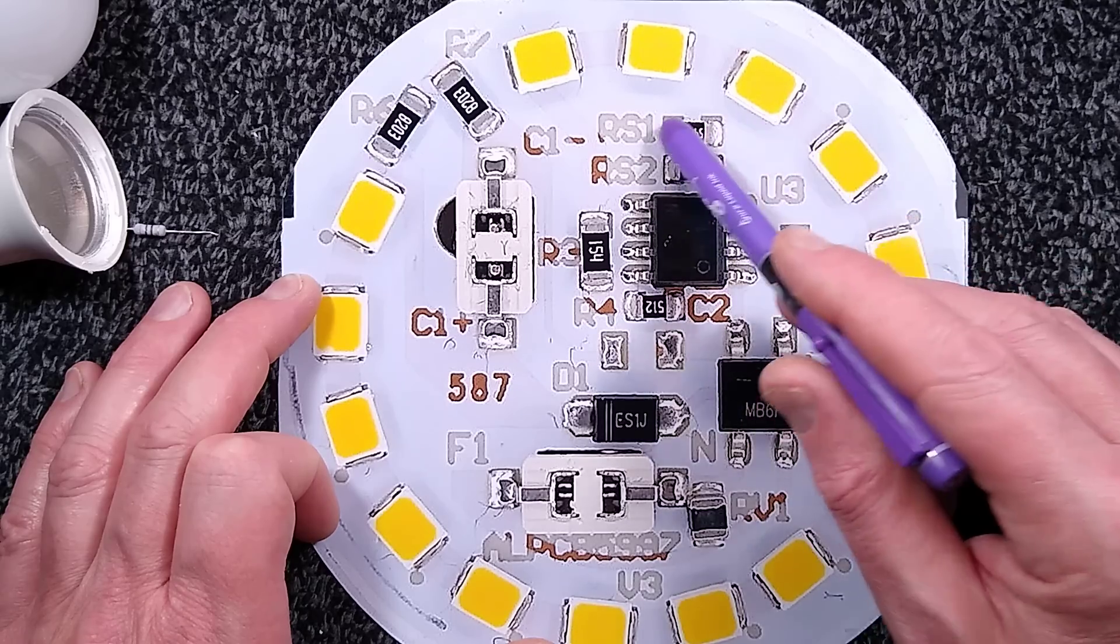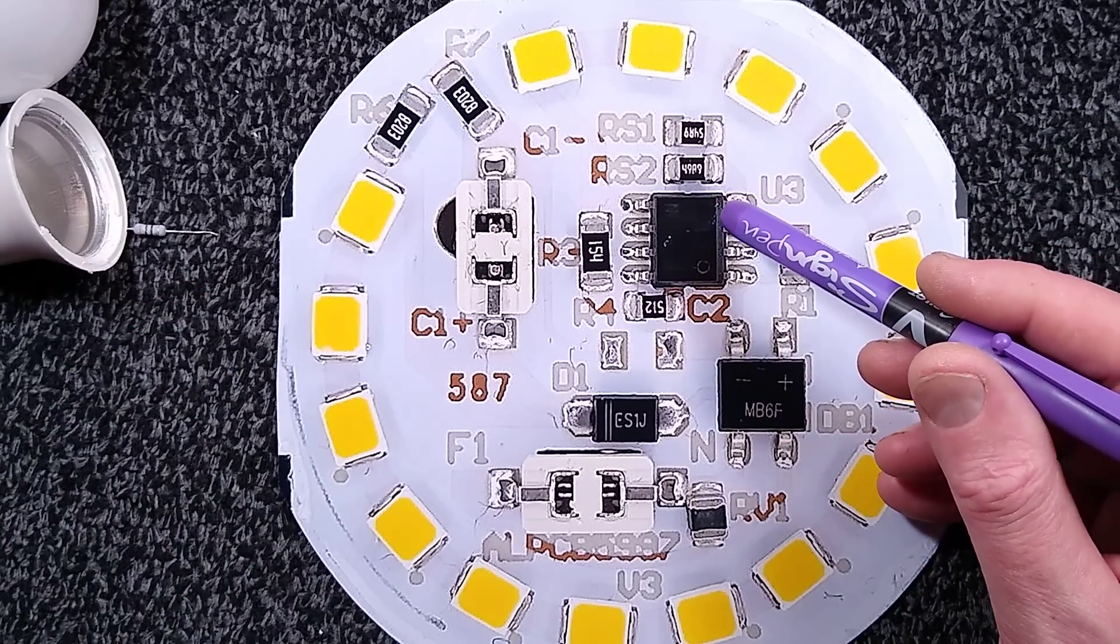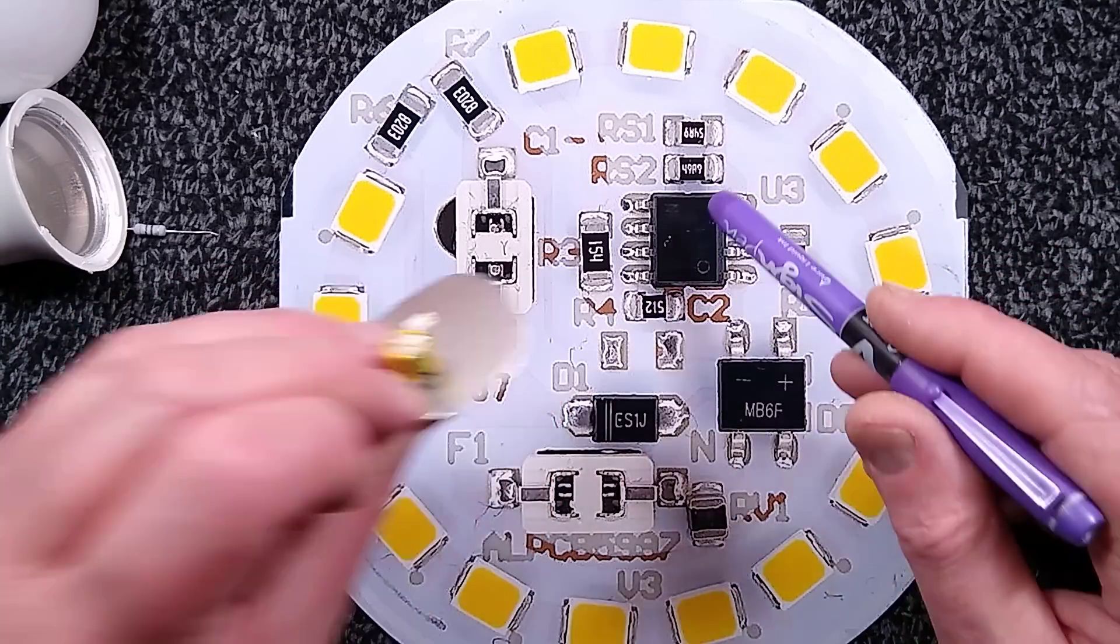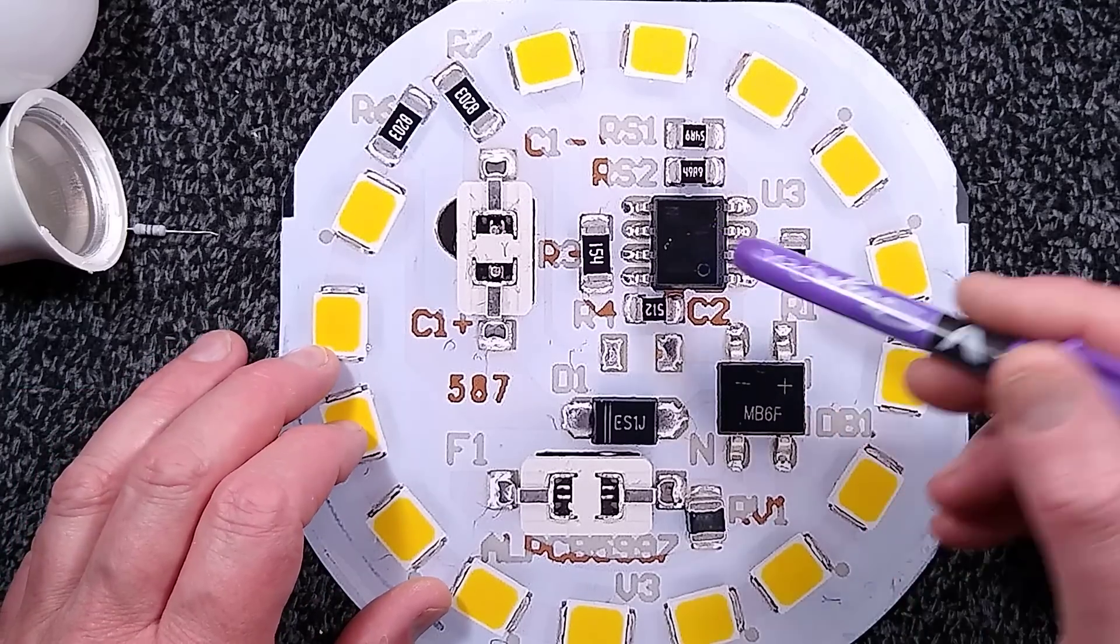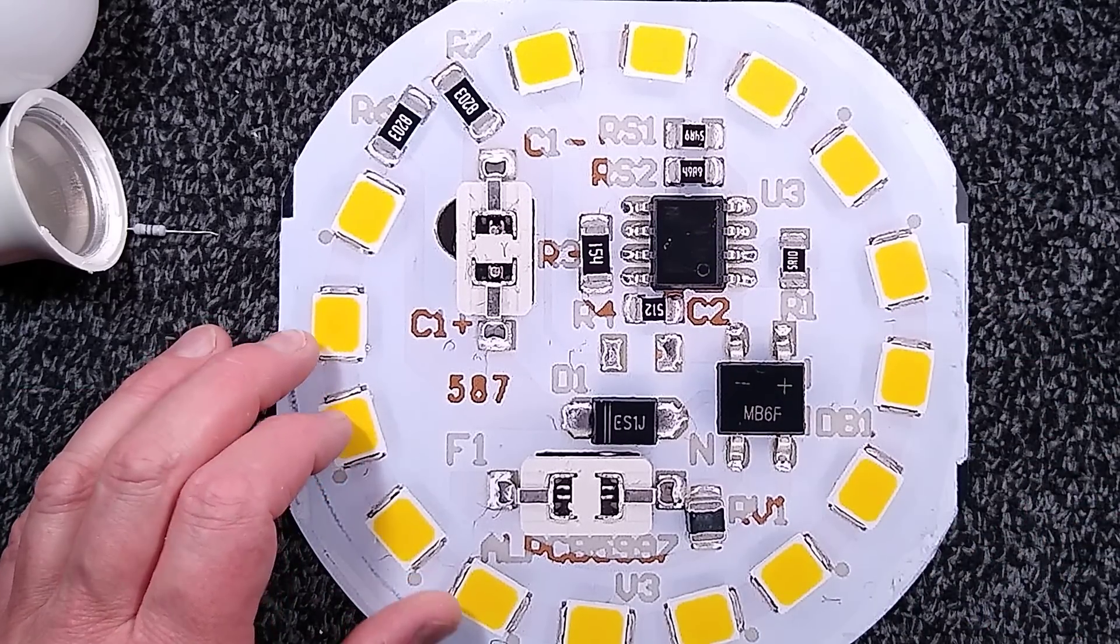It's quite hard de-soldering on these aluminum boards, but removing one of these will pretty much half the power of the lamp and make it last a much longer time.